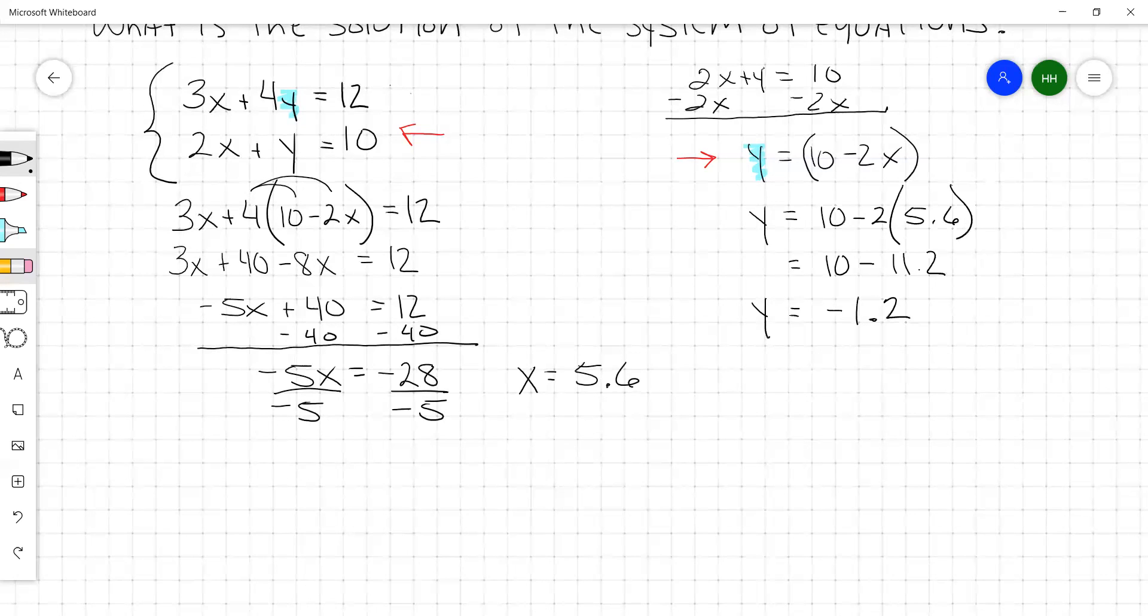Here's how you write the solution to this system. It's a point located at 5.6 and negative 1.2 on the coordinate plane. This x and y value, if substituted into both equations, would make them both true. Because it is the point where the two lines intersect on the coordinate plane.